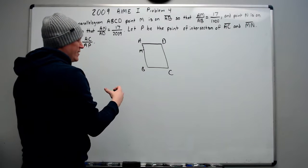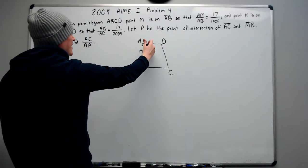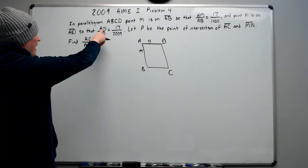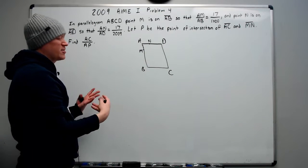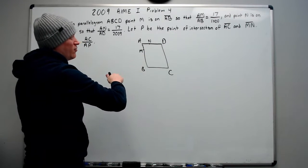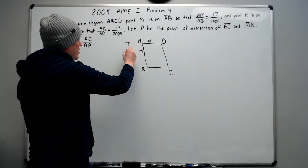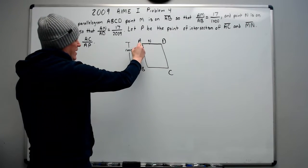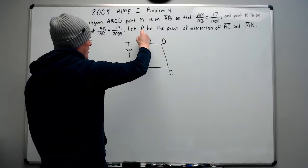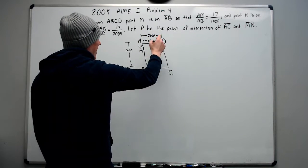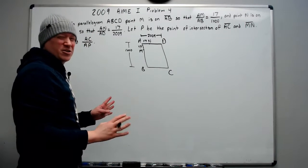Point N is on AD, so we'll put N right here, so that AN over AD is 17 over 2009. Before we continue, let's do some things. AM over AB is 17 over 1000. There's really no reason we can't just let AB equal the length of 1000, in which case AM would be exactly 17. We can do the same thing over here. We can say that AN is 17 and AD is 2009. You'll notice that 2009 looks shorter than 1000. We don't really care.